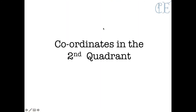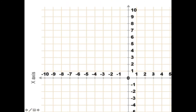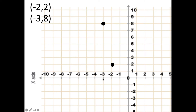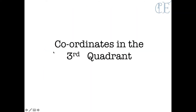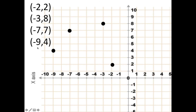Quadrant 2 has negatives on the x-axis. So here we have (−2, 2) — across to minus two on the x-axis first, then up to two on the y. It's always the x-axis first. Further examples: (−3, 8), (−7, 7), (−9, 4).